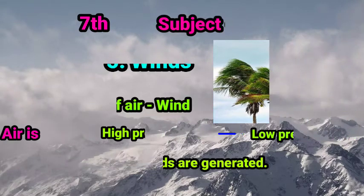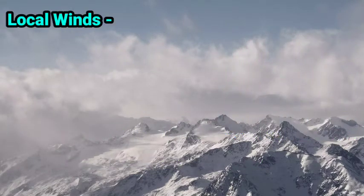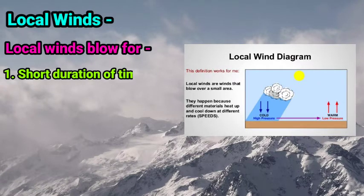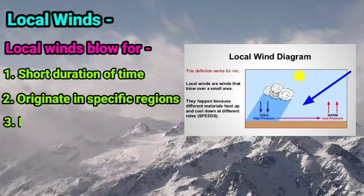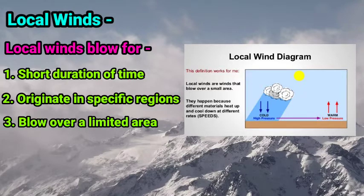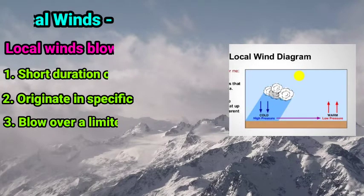Today we are going to learn some more types of wind. In the last video we learned about planetary wind, so here number 2 — local winds. The winds that blow for a short duration of time, originate in a specific region, and blow over a limited area are called local winds. Local winds affect the climate of the region where they blow. These winds are known by different local names in the different regions where they blow.